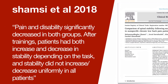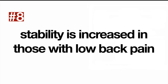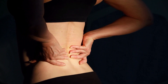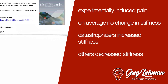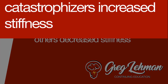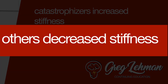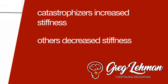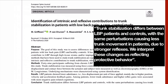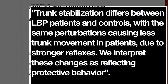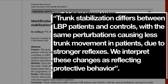Number eight: stability is often increased in those with low back pain. We've seen this a lot through the years, most recently in studies by Ross, which experimentally induced low back pain. A very cool finding was that catastrophizers — those who worry about their pain — tend to increase their stiffness when in pain, while those who don't catastrophize decrease their stiffness. Other papers, including work by Van Dieën, showed more than 10 years ago that people with low back pain are more stiff and have more stability, attributed to an increase in the reflexive contribution to trunk stability. People with low back pain are not more unstable.